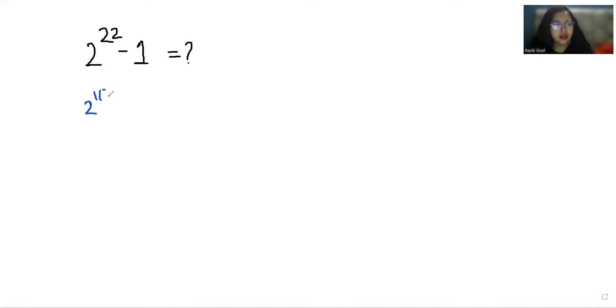...it as 2 power 11 power 2 minus 1 we can write it as 1 square. Now we can use the identity a square minus b square which is equals to a plus b times a minus b, where a is 2 power 11 and b is 1. So 2 power 11 plus 1 times 2 power 11 minus 1.